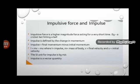Impulse can be calculated by the product of force into time: J = F × T. We can also define impulse as change in momentum: J = MV − MU, where M is mass, V is final velocity, and U is initial velocity. The SI unit of impulse is kg·m/s and it is a vector quantity.